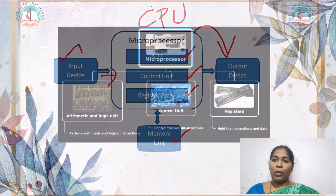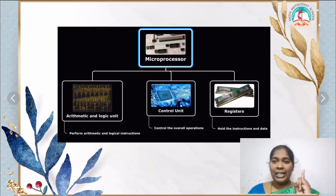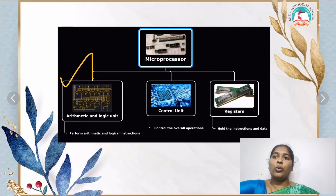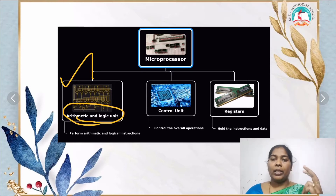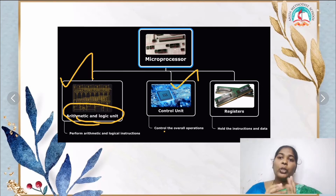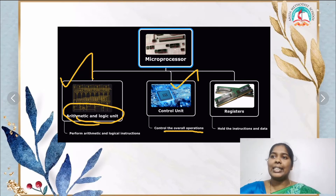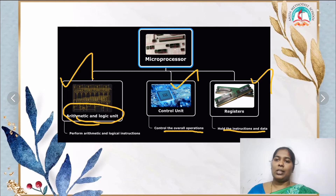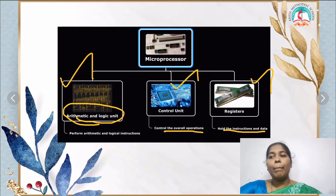The microprocessor has three components: the Arithmetic Logic Unit (ALU), the control unit, and registers. The ALU is used to perform arithmetic and logical instructions — additions, subtractions, and all logical and arithmetic operations. The control unit controls the overall operations through signals. The registers hold the instructions of data to be executed by the processor.